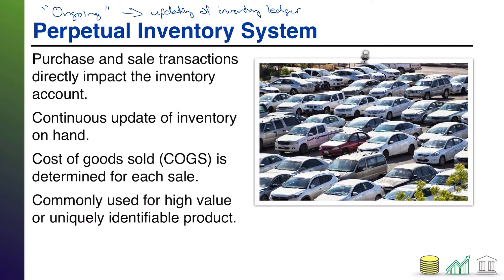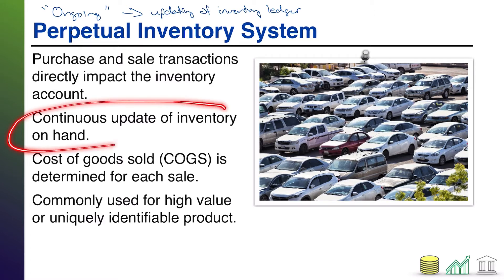You also know how much you sold that car to the customer for, so you know the revenue. You can figure out the difference to determine what was your profit on that particular car, and you can do that with every single car in your inventory. That is the pro of using a perpetual inventory system. One: you can figure out gross profit down to an item-by-item basis. Two: your inventory balance is always up to date. If somebody wants to know if a particular car is on your lot, all you have to do is look in the system — you'll know because you're consistently updating on an ongoing basis.